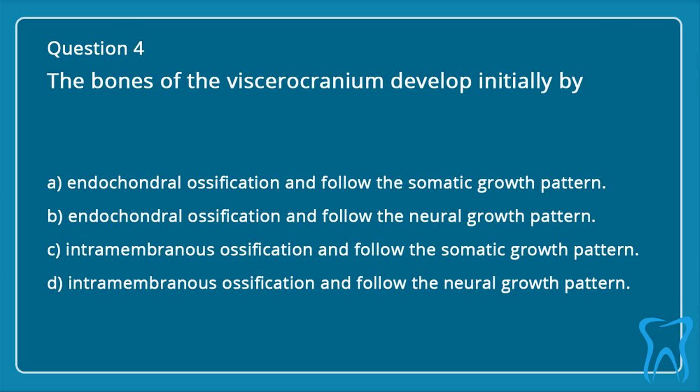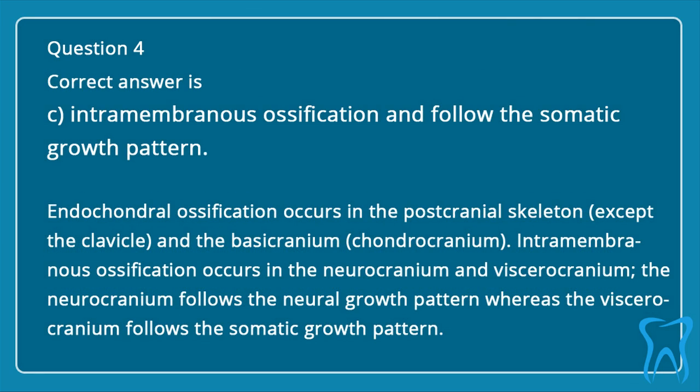Question 4: The bones of the viscerocranium develop initially by: a. Endochondral ossification and follow the somatic growth pattern. b. Endochondral ossification and follow the neural growth pattern. c. Intramembranous ossification and follow the somatic growth pattern. d. Intramembranous ossification and follow the neural growth pattern. Correct answer is c: intramembranous ossification and follow the somatic growth pattern.